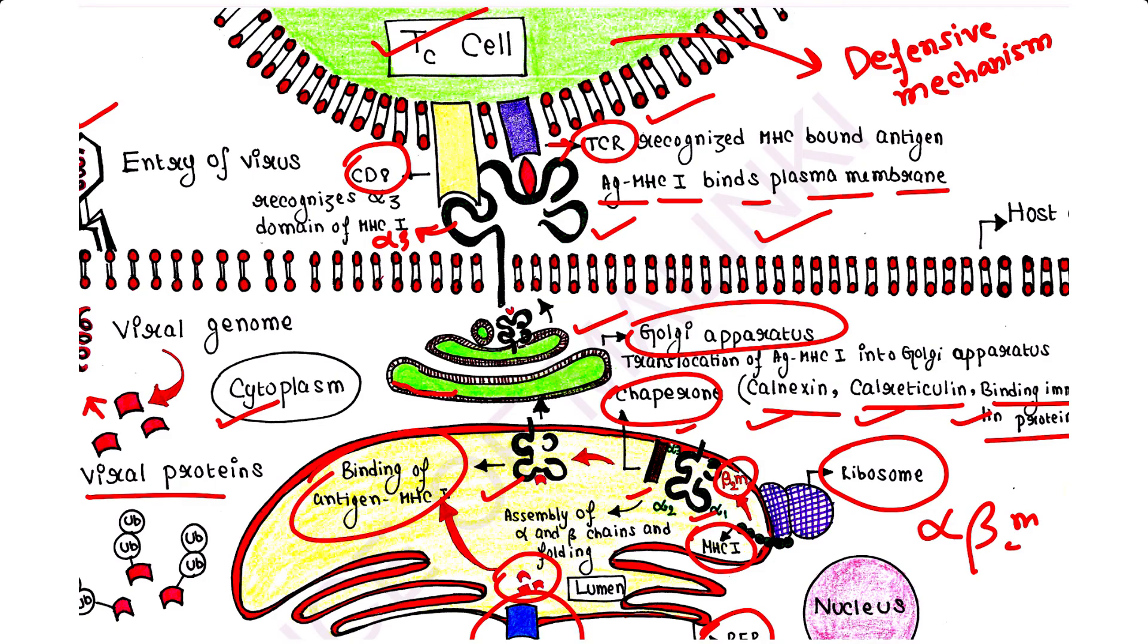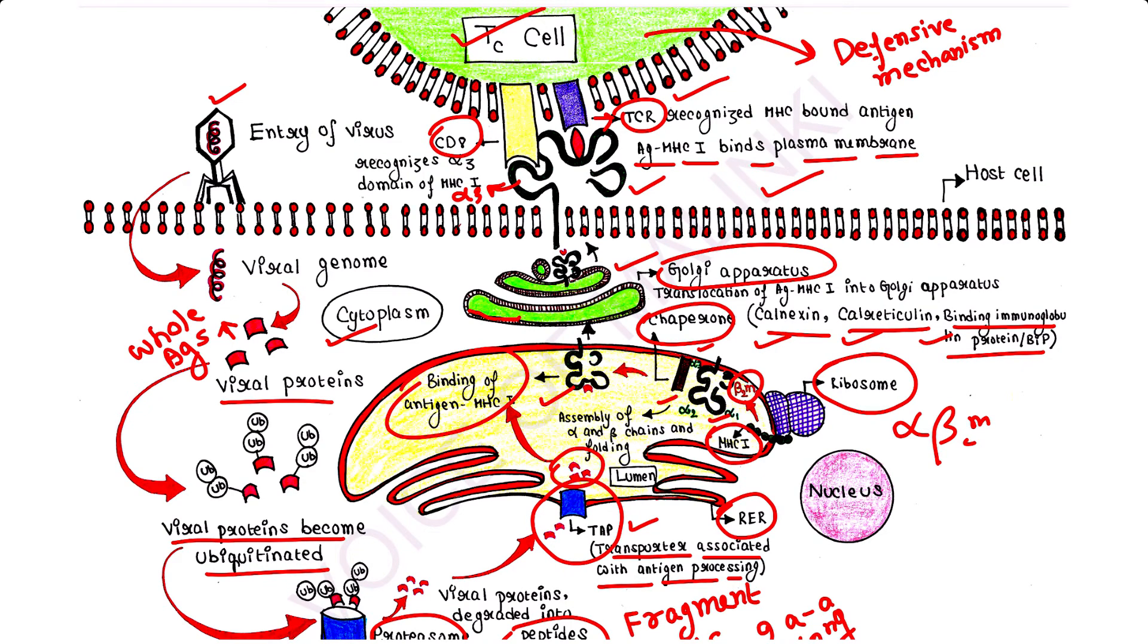MHC1 processes and presents endogenous or intracellular antigens. The process by which whole antigens, the viral proteins, are degraded to produce fragment antigens is known as antigen processing. These fragment antigens combine with MHC molecules inside the cell. The MHC-antigen complex thus formed travels to the cell membrane. In the cell membrane, MHC displays its bound antigen to T cells. This is known as antigen presentation.